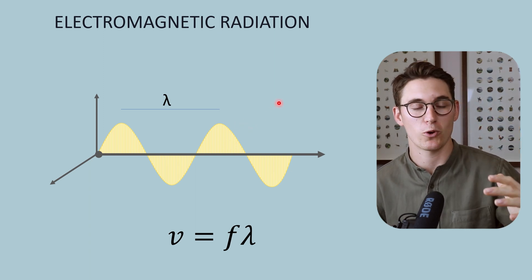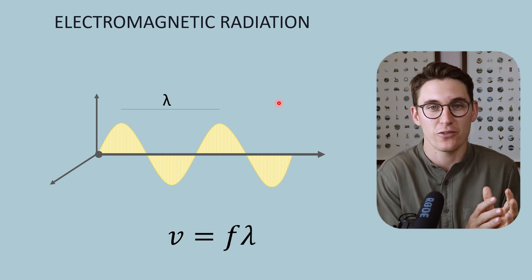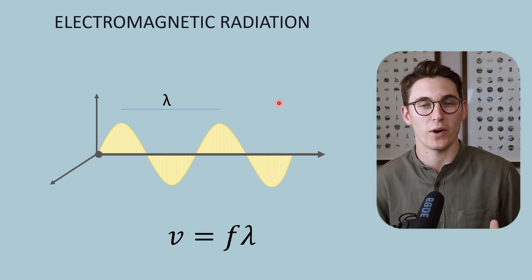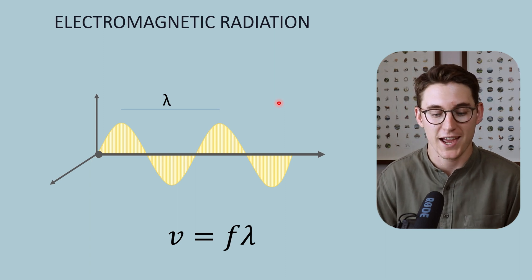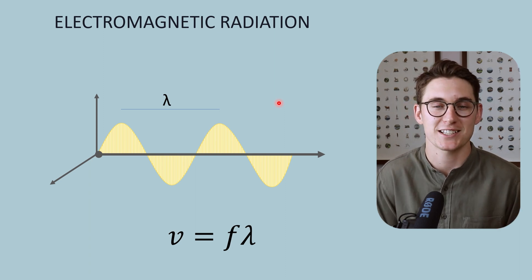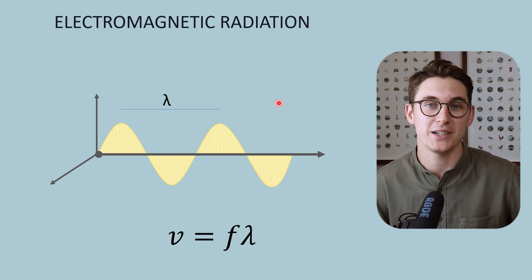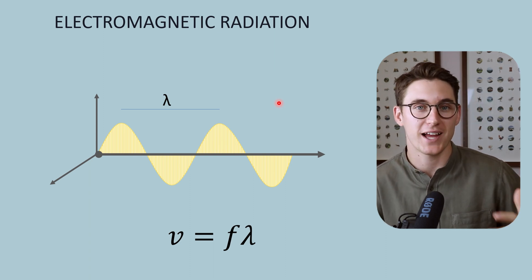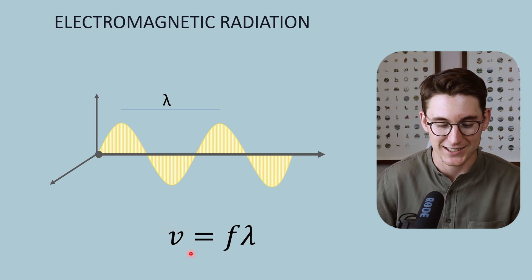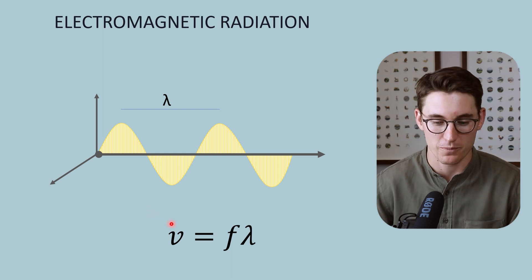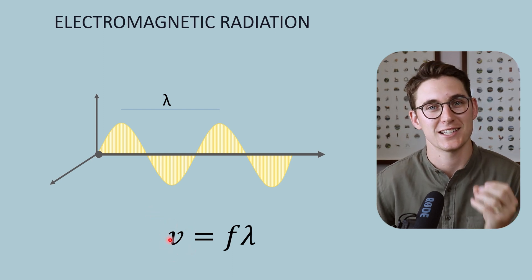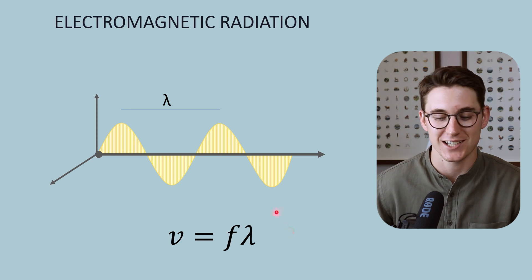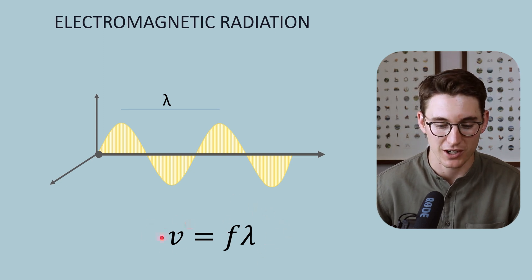Radio waves, microwaves, X-rays, and gamma rays — the construction of the wave is exactly the same; only the wavelength and frequency change. Electromagnetic waves are self-propagating waves, and they travel through a vacuum at a constant speed — the speed of light. They don't require a medium to propagate. Radio waves and X-rays travel at the same speed; our velocity is the same for all electromagnetic radiation in a vacuum. So if velocity stays the same, frequency and wavelength must be inversely proportional — as frequency increases, wavelength decreases.